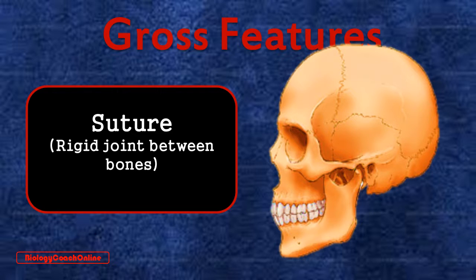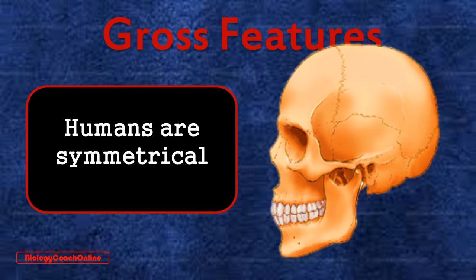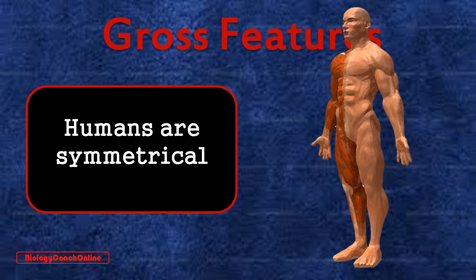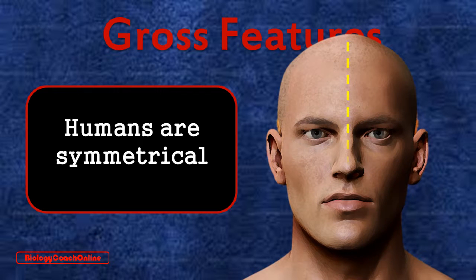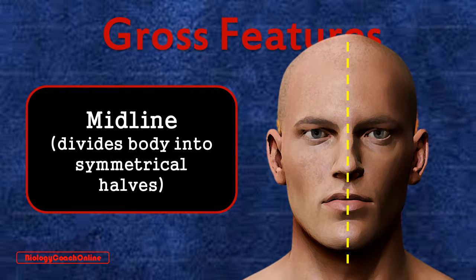Now the human organism is by and large symmetrical — what we have on one side of the body, we also have on the other. So we have a right arm and a left arm, a right leg and a left leg, a right lung and a left lung, and so forth. Looking at the head, we can divide the face right down the middle. This line represents what we call the midline — an imaginary plane dividing the body into symmetrical halves. You have a right eye and a left eye, a right ear and a left ear, and so forth.